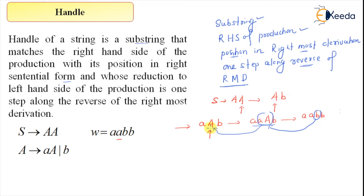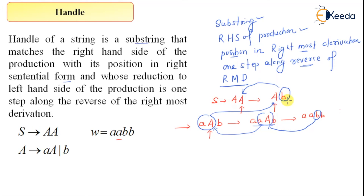We have to traverse it in the opposite order. Here for this string, small a, capital A is getting reduced to capital A — that is the handle for this string. Here b in the reverse step is getting reduced to capital A, so for this string a, b, b is the handle. And here the entire double A is getting reduced to S, so I will consider double A as the handle.